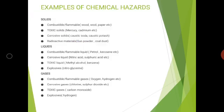Chemical hazards can be categorized as solids, liquids, or gases. Combustible or flammable solids include wood, wool, and paper. Toxic solids include mercury and cadmium. Corrosive solids include caustic soda and caustic potash. Radioactive materials include gunpowder and coal dust. Flammable liquids include petrol and kerosene. Corrosive liquids include nitric acid and sulfuric acid. Toxic liquids include methyl alcohol and benzene. Explosives include nitroglycerin. Gases include oxygen and hydrogen (combustible), chlorine and sulfur dioxide (corrosive), carbon monoxide (toxic), and hydrogen (explosive).